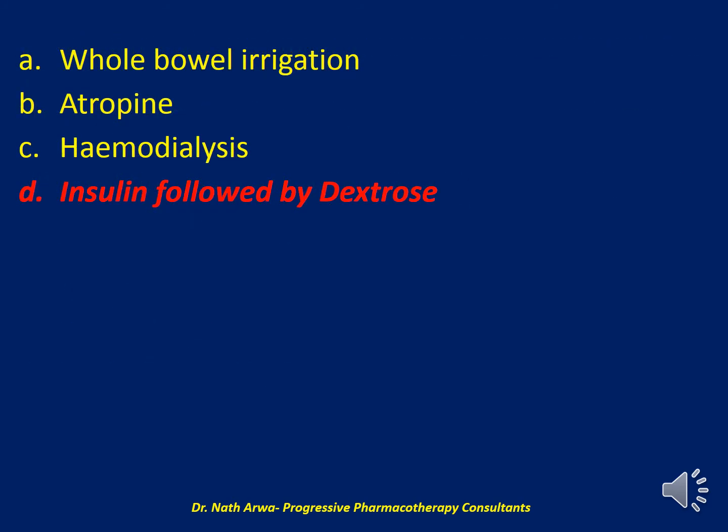I would advise them to infuse insulin followed by dextrose. Isradipine, marketed as Dynacirc, is an oral dihydropyridine calcium channel blocker with a half-life of around 8 hours. Insulin followed by dextrose is commonly used in the management of calcium channel blocker overdose. The efficacy of atropine use is unknown in calcium channel blocker toxicity, and while it can be tried, it generally doesn't work as well as insulin followed by dextrose.